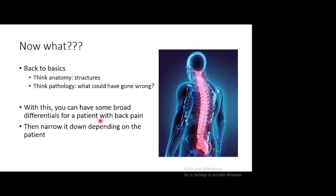Think about other structures. The pain may be coming from the skin — the patient may have herpes zoster. There may be muscles in and around the back causing pain. More importantly, it may be an internal abdominal structure causing referred pain; the pancreas is one common example — pancreatitis and pancreatic cancers can cause back pain. Pathologically, there are four important areas you cannot miss: infection, inflammation, trauma, and malignancy.